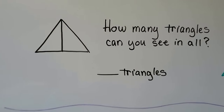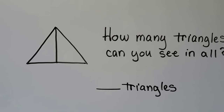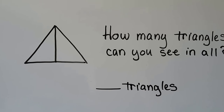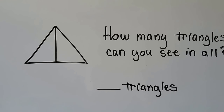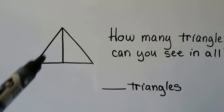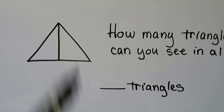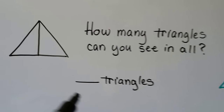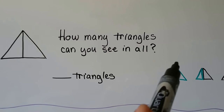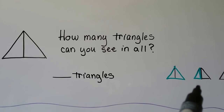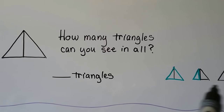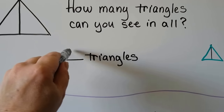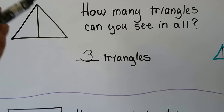Now how many triangles can you see in all? I can see the easy ones inside — one, two — but do you see the big one going all the way around? So there's a big triangle going all the way around the outside, a little triangle on the left, and a little triangle on the right. So there are three triangles here. The lines make three triangles.